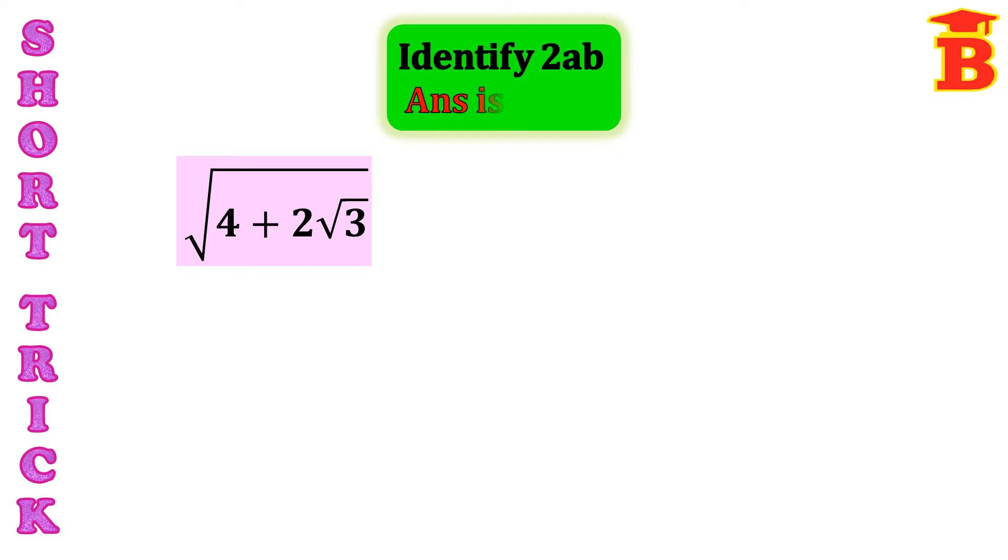Then the answer will be A plus or minus B. Here, this is the 2AB term. Since we have 2 here, this can be written as root of 4 plus 2 root 3 into 1. Now, comparing with 2AB, here A equal to root 3 and B equal to 1.